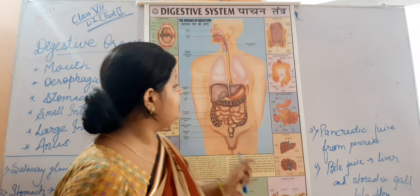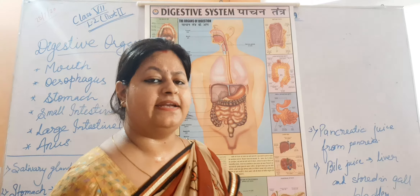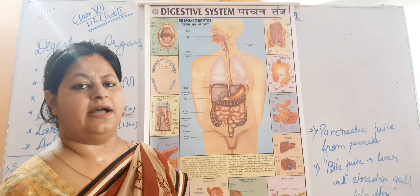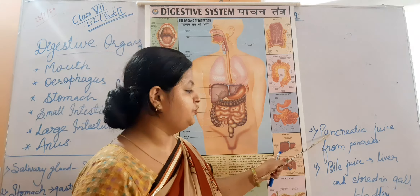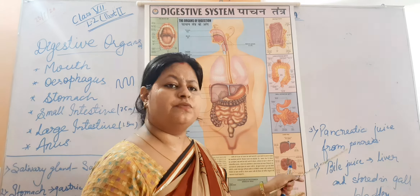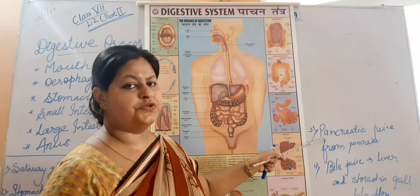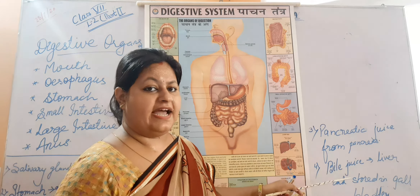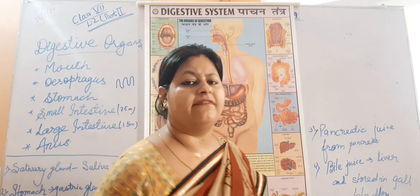In the small intestine, pancreatic juice is secreted by the pancreas, and bile juice is secreted by the liver. Digestion is almost complete in the small intestine with the help of pancreatic juice from the pancreas and bile juice from the liver. Bile juice is produced by the liver and stored in the gall bladder before being released into the small intestine.